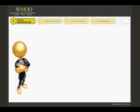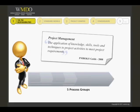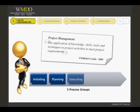The Project Management Institute has defined project management as the application of knowledge, skills, tools and techniques to project activities to meet project requirements. Furthermore, this is achieved through the application of 42 project management processes that fall into five groups: Initiating, Planning, Executing, Monitoring and Control, and Closing.